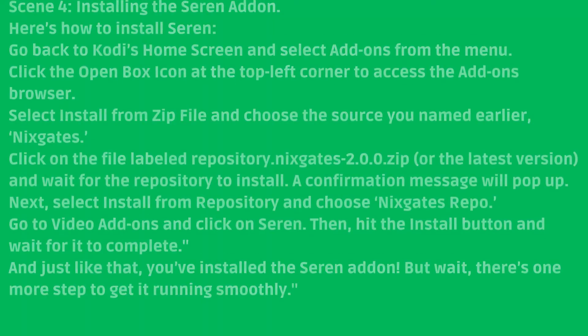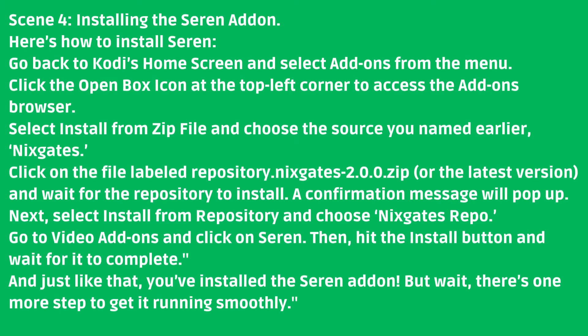Click on the latest version zip file and wait for the repository to install. A confirmation message will pop up. Next, select Install from Repository and choose Nixgates Repo. Go to Video Add-ons and click on Seren. Then hit the Install button and wait for it to complete. And just like that, you've installed the Seren Add-on.